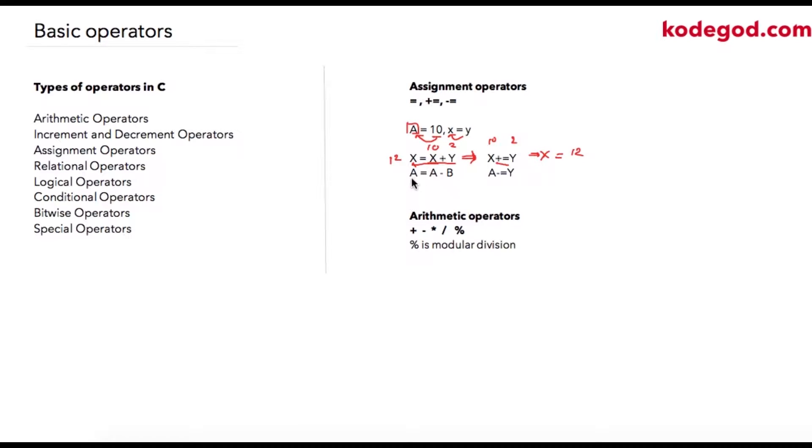Similarly, instead of writing X equal to X minus B, I can write A minus equal to Y. In other words, I'm decrementing value of A, which is 10 with value of Y. So 10 minus 2, it will become my new value of A.